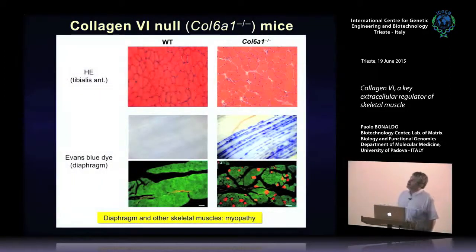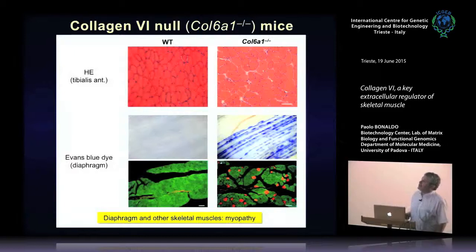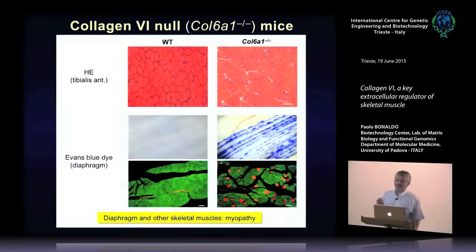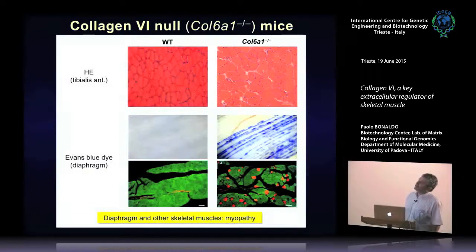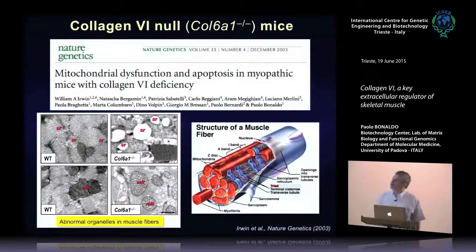We performed histology of muscle and found a myopathic phenotype in knockouts — many degenerating fibers and also regenerating fibers, which have centrally located nuclei instead of peripheral nuclei. In the wild-type there are no centrally located nuclei. By systemic injection of Evans blue dye — which circulates in body fluids and does not cross intact myofibers — wild-type fibers are completely negative, but in knockout mice many fibers are positive to this dye and also have irregular shape.